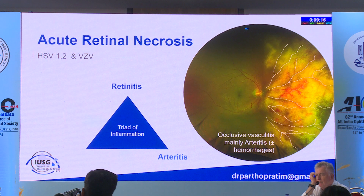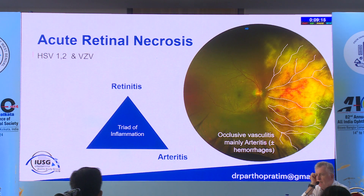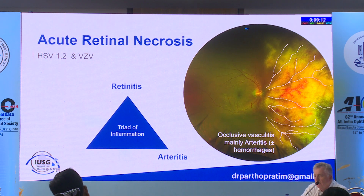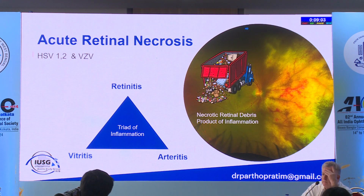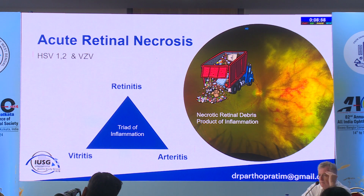The second component of the triad is arteritis — you can see occlusive vasculitis mainly involving the arteries. The inflammatory process generates a lot of debris that moves into the vitreous, producing significant vitritis in these patients.